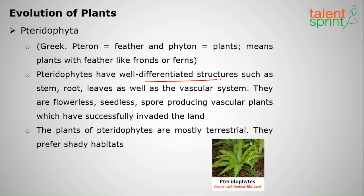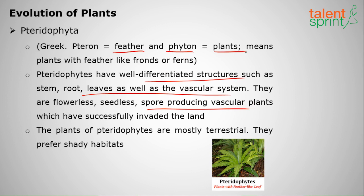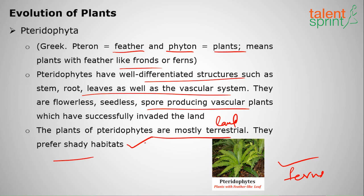Pteridophytes have well-differentiated structures and a vascular system, but they are dispersed by spores, not seeds. The word comes from Greek: 'pteron' means feather and 'phyton' means plant — they look like feather-like plants, such as ferns. These plants are mostly terrestrial, preferring shady habitats, and they lack seeds.